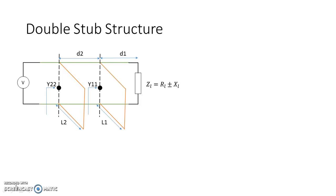Y11 comprises two elements: one coming from the transmission line side, YD1, and one coming from the stub side, YS1. Because both are in parallel, they add together. Similarly, Y22 can be decomposed into YD2 and YS2. So we write Y11 = YD1 ± YS1 and Y22 = YD2 ± YS2.